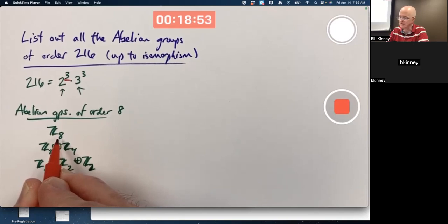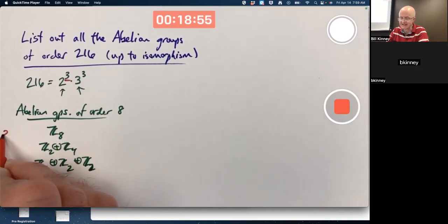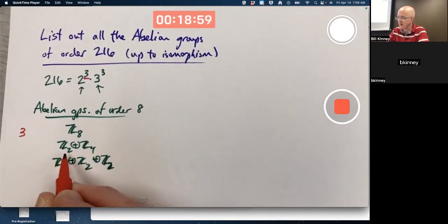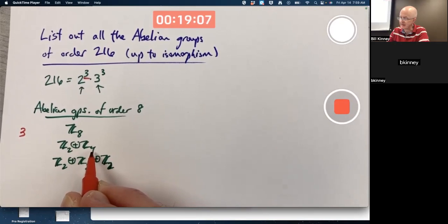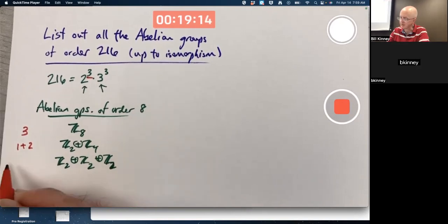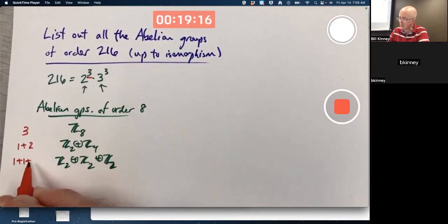Z₈, 8 being 2³, corresponds to partitioning 3 as just itself, 3. The external direct product of Z₂ with Z₄, thinking about the powers of 2 here, 2¹ and 2², corresponds to the partition of 3 that is 1 + 2. And this one, having powers of 2 that are all 1s, corresponds to the partition of 3 that is 1 + 1 + 1.